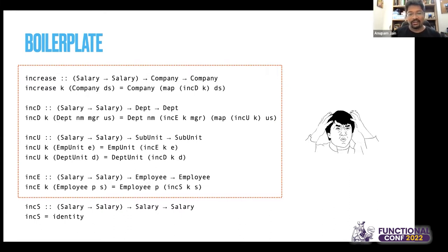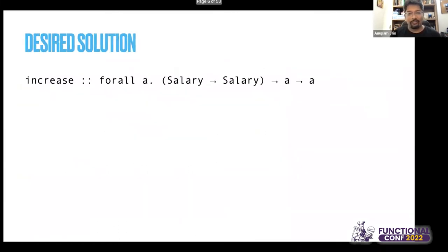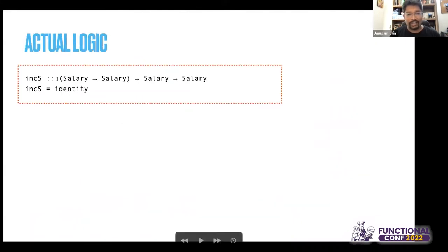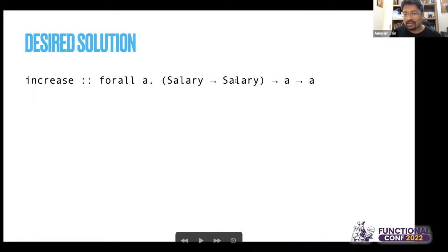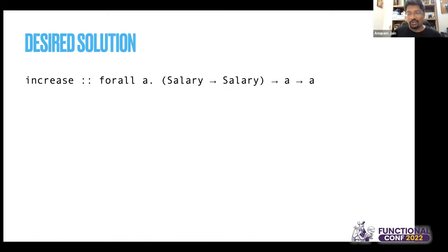If we were actually doing this in an untyped dynamically typed language, it would be very easy. We would just check if the value we were trying to modify is a salary, and if it is, apply the function; otherwise don't do anything. But because we want to do this in a typed, safe way, we want a typed function that can take any type A and a salary modification function and give us that type modification function. This is what PureScript Typeable will allow us to do effectively.